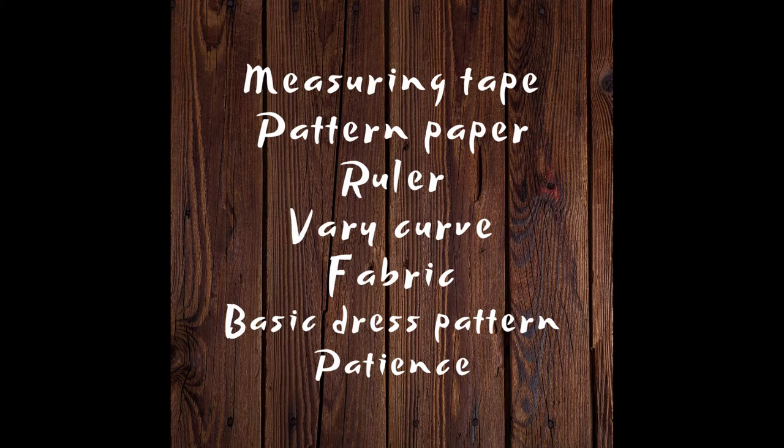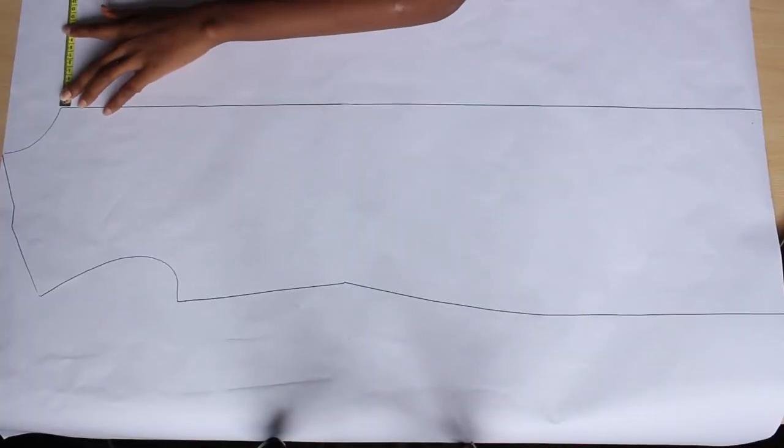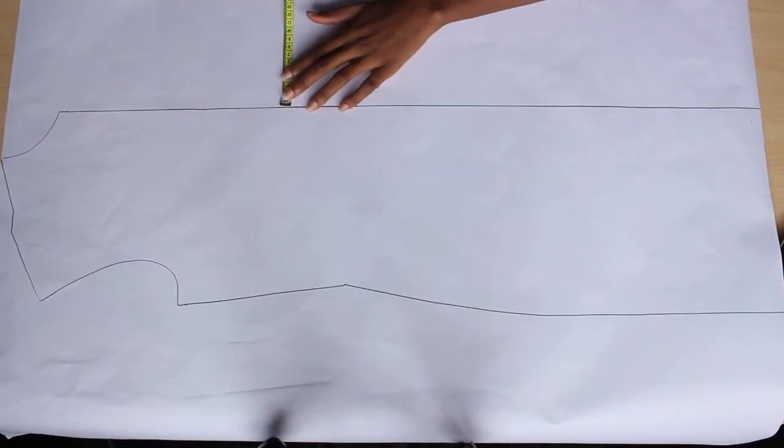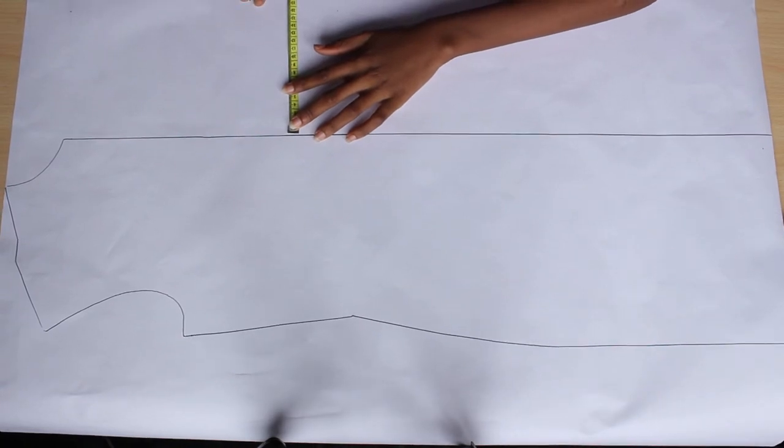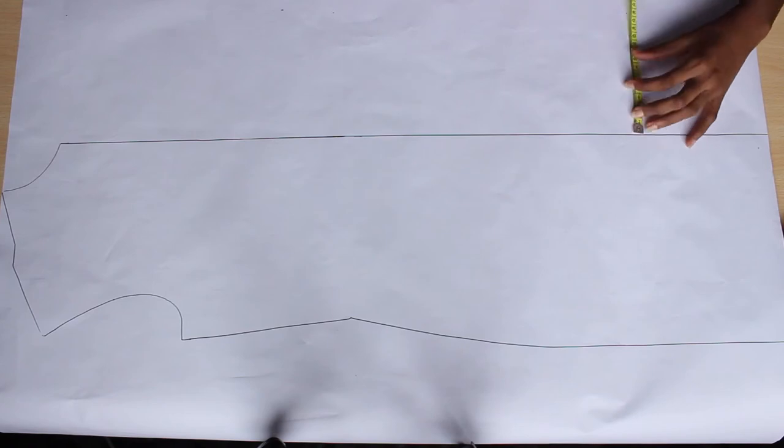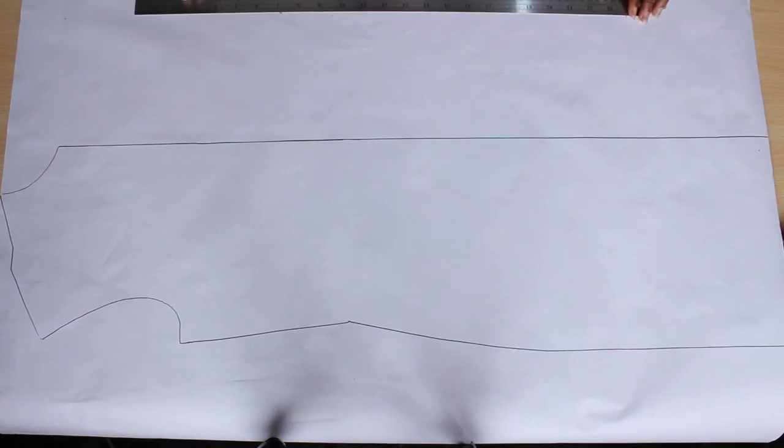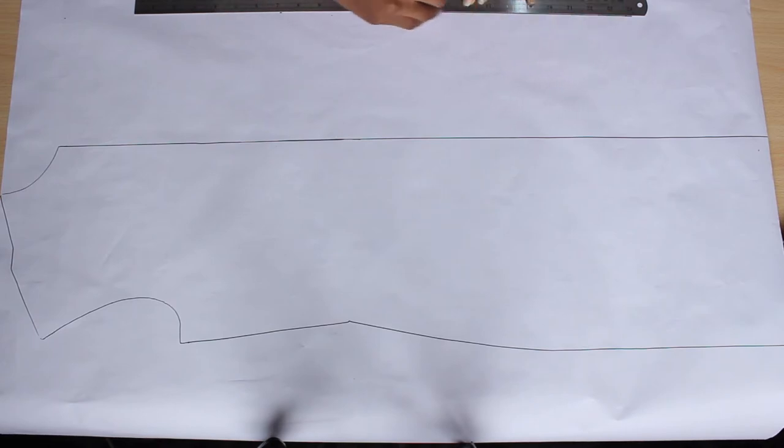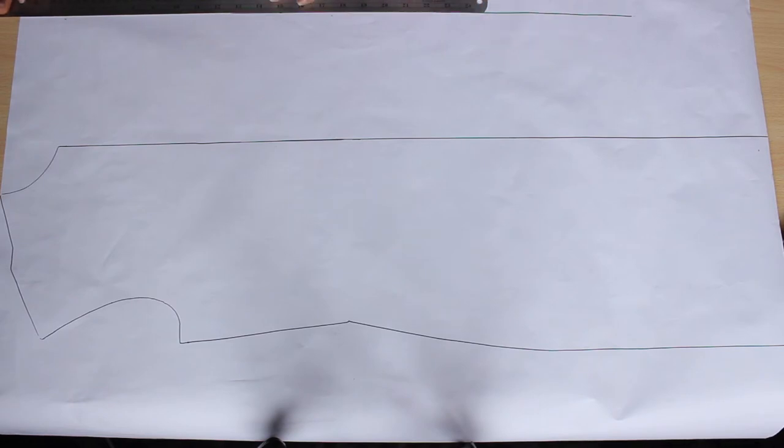So what I'm doing here is I am extending my center front by 16 centimeters at different points of the center front. And now I'm going to get my ruler and I'm going to just connect those dots and draw a straight line to join them together. This extension is going to form my overlap.